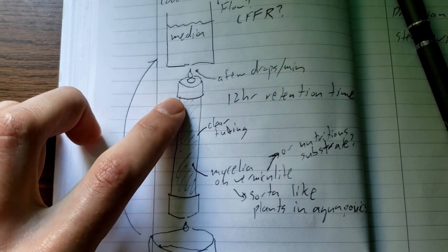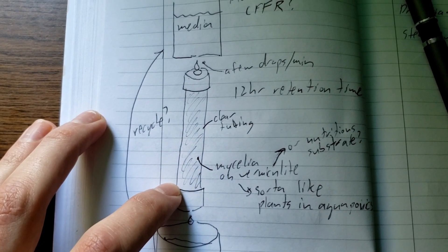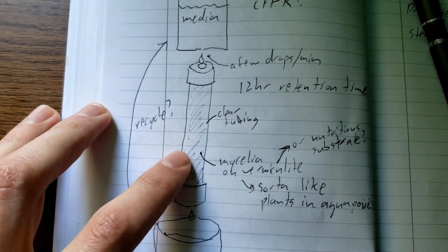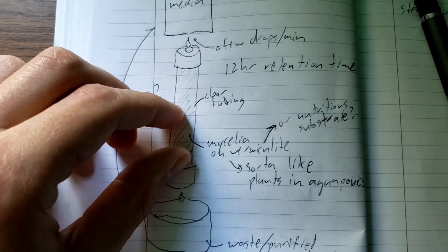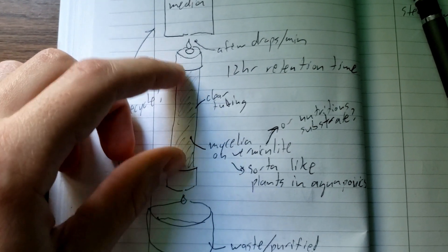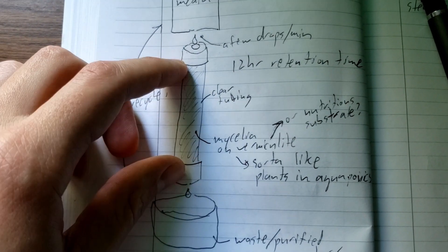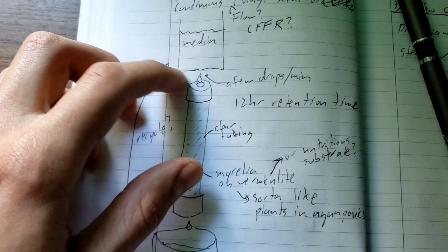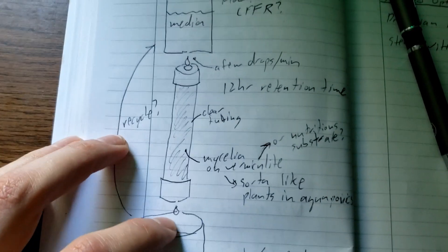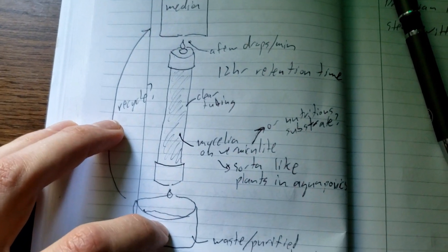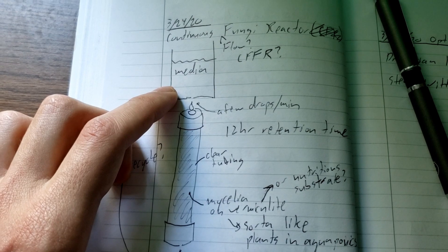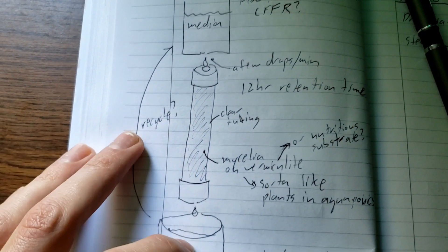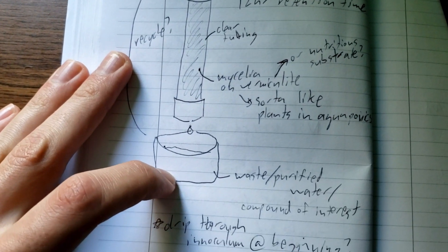For my design, I'm thinking to fill this tube with some vermiculite, maybe a tiny bit of brown rice flour, to initially get the fungi to grow. Once the fungi is established in this reactor, I can run some interesting experiments — either with contaminated liquids to see if the compound breaks down, or just media to watch the growth of the fungi and see what comes out the other side.